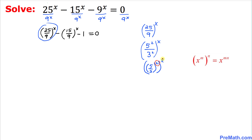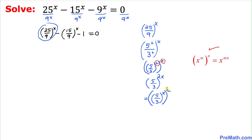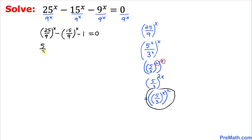Since we have two exponents — 2 and x — we apply the power-of-power rule, so this becomes (5/3)^(2x), which in turn can also be written as (5/3)^x raised to the power 2. Now on the left-hand side, the first term is thus (5/3)^x squared.